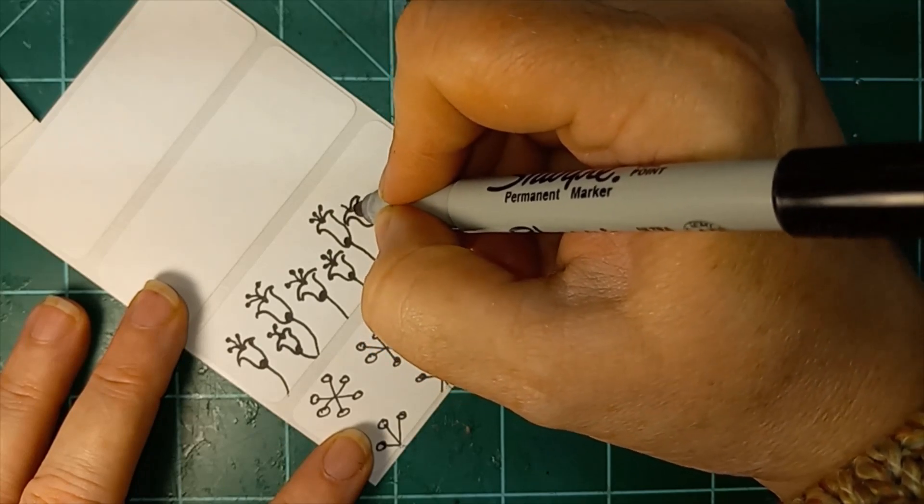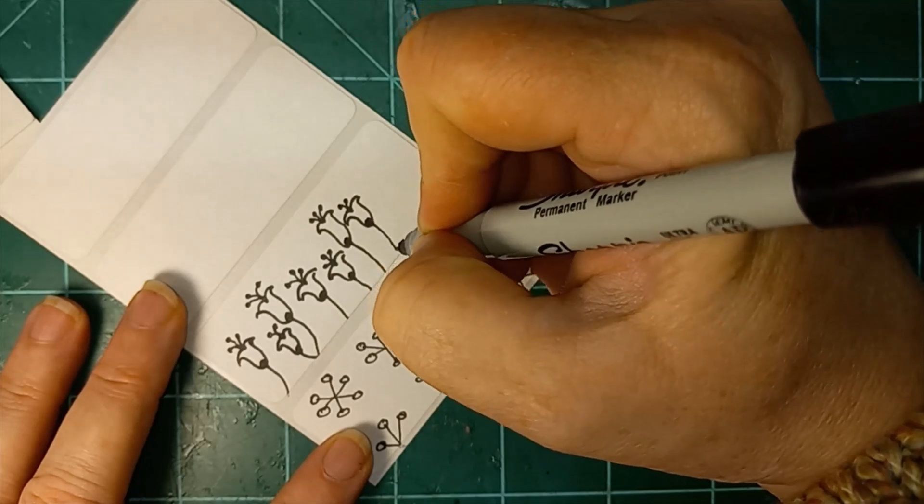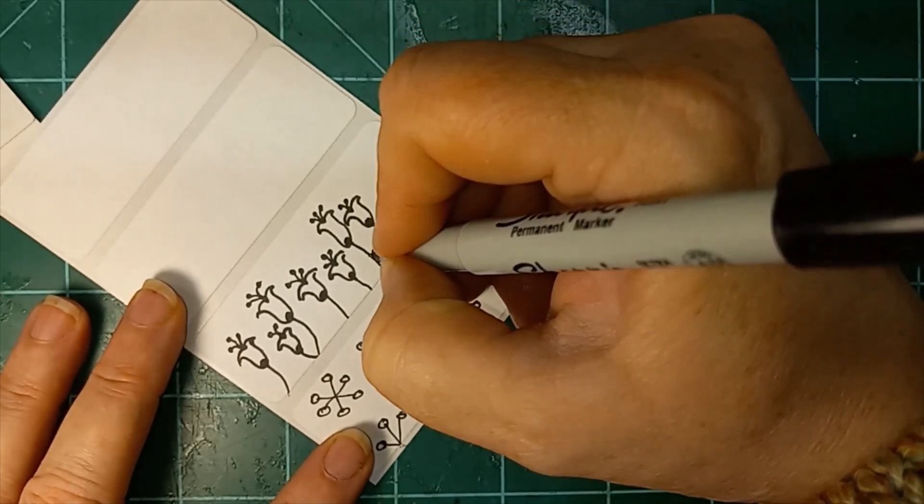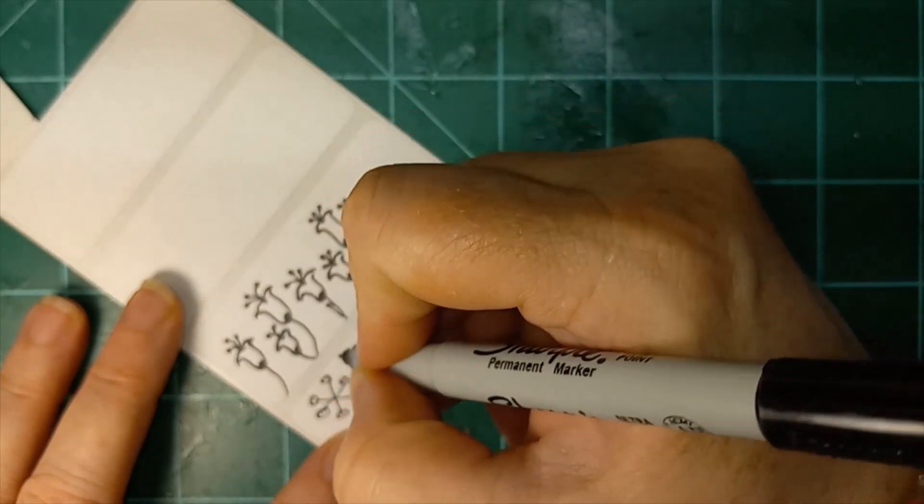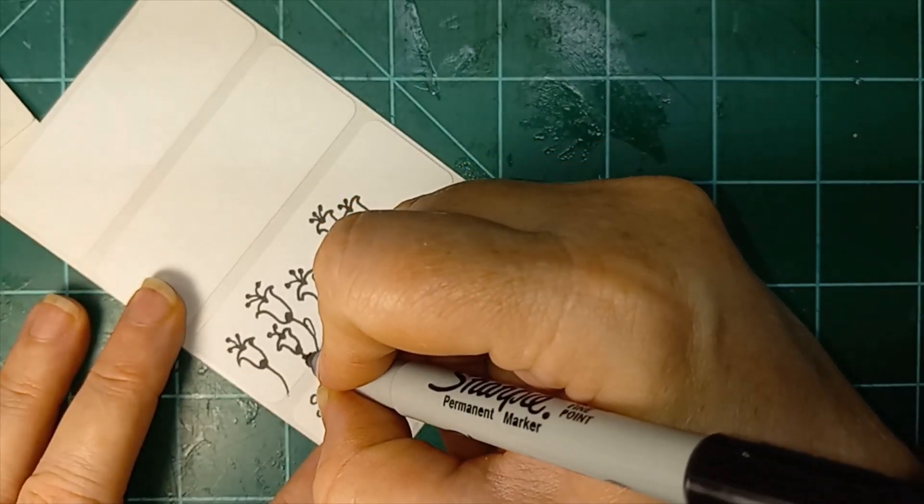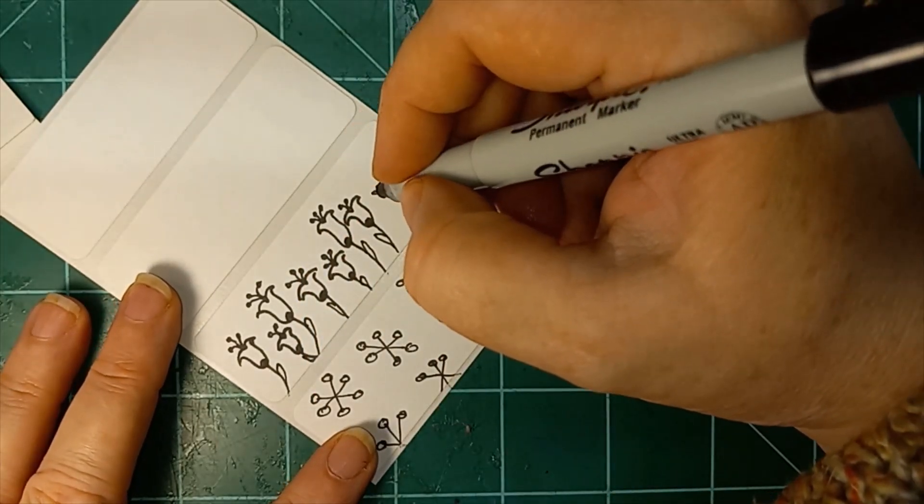But yes, very simple flower. All of these are very simple flowers. And you can always add petals. And sometimes you just need one. You don't necessarily need to add one to both sides. Sometimes just a single petal on the one side works too.